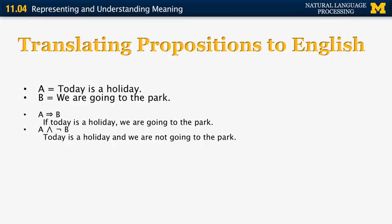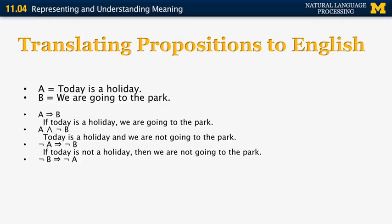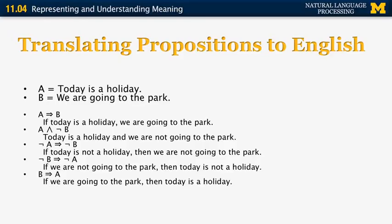A and not B. Today is a holiday and we are not going to the park. Not A implies not B. If today is not a holiday, then we are not going to the park. Not B implies not A. If we are not going to the park, then today is not a holiday. And finally, B implies A. If we are going to the park, then today is a holiday.